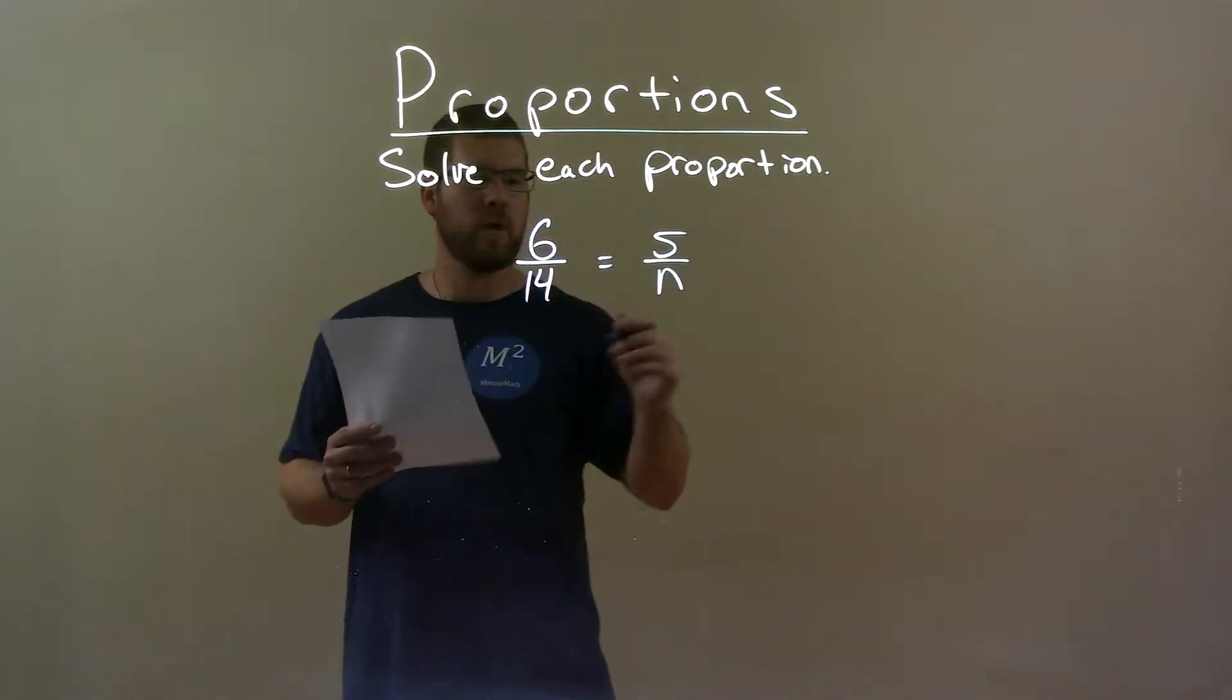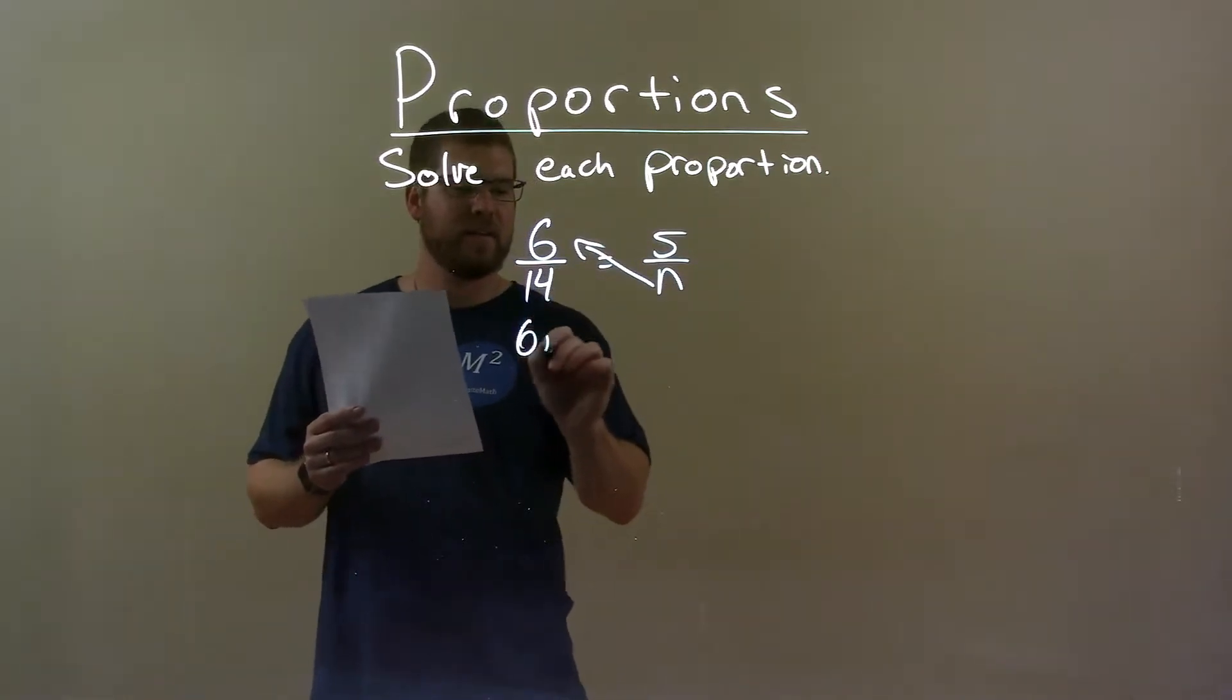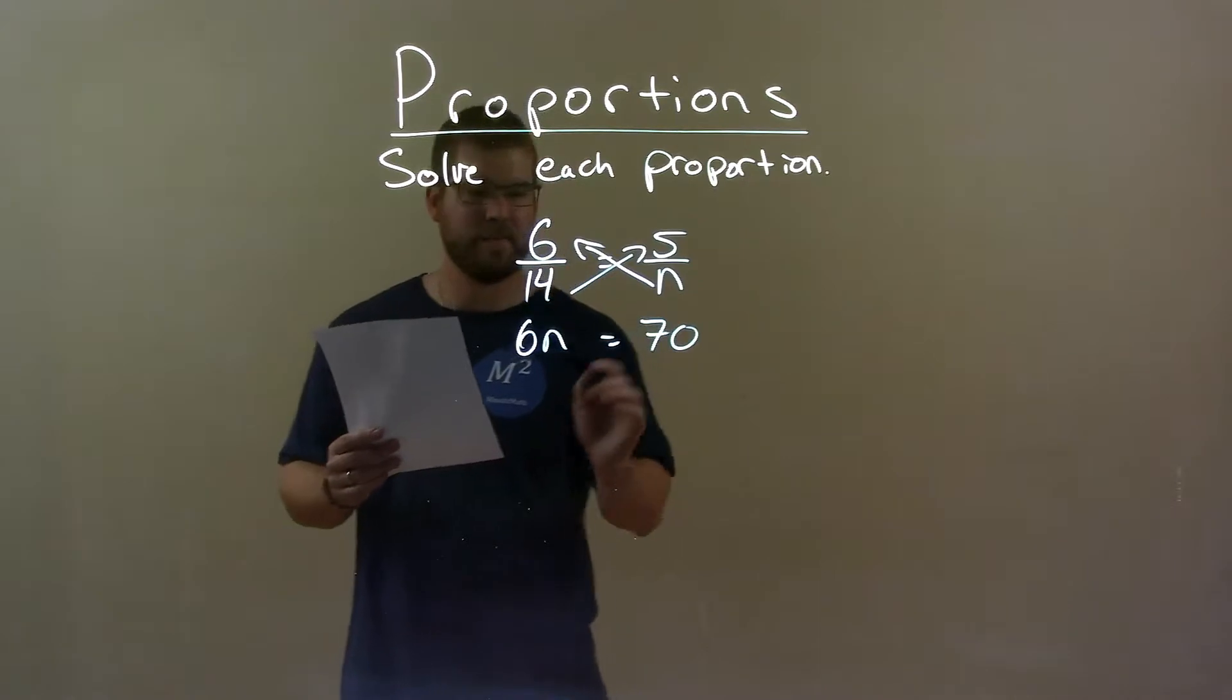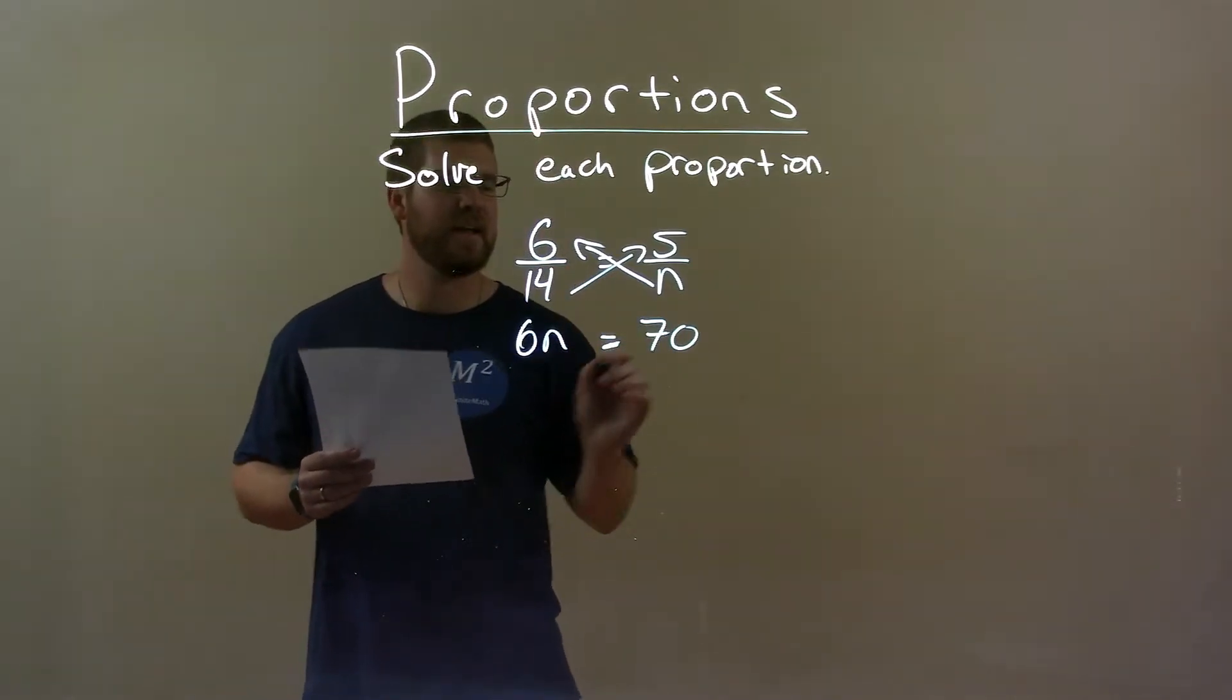First thing I want to do is cross-multiply. 6 times n is 6n and 14 times 5 is 70. So now I have 6n equals 70.